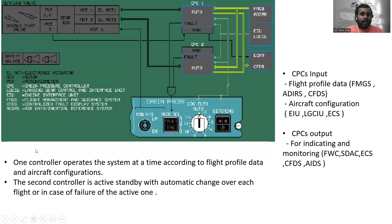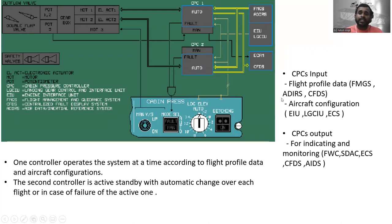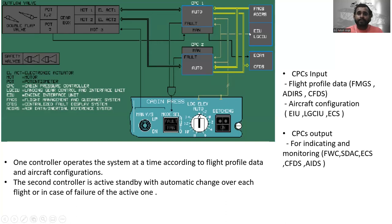One controller operates the system at a time according to flight profile data and aircraft configuration. The second controller is on active standby with automatic changeover each flight or in case of failure of the active one. CPC inputs include flight profile data from FMGS, ADIRS, CFTS, and aircraft configuration from EIU, LGCIU, ECS, and CPS. Outputs go to flight warning computers, SDAC, ECS, CFDS, and AIDS for indicating and monitoring.